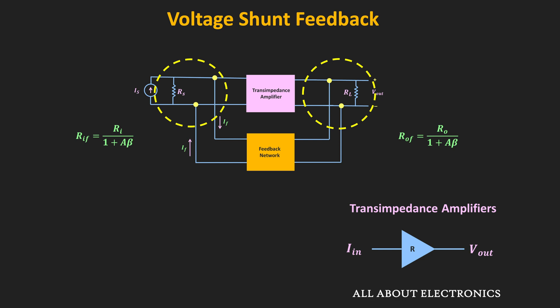Here, A is the gain of the basic trans-impedance amplifier, and β is the feedback factor of this feedback network. So now let us see how the input and output impedance reduces and how we get these expressions.